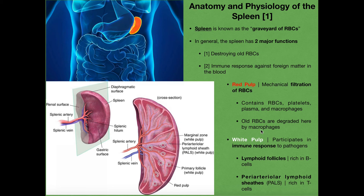What's probably new with the lymphatic system is the white pulp. The white pulp is deep to the red pulp — you can see the whitish areas in the spleen cross-section here. The primary function of the white pulp is to participate in immune responses to pathogens that enter through the blood. To combat those pathogens, the spleen has lymphoid follicles. A primary follicle is very dense with white pulp, and these lymphoid follicles are rich in B cells — the structures that look almost like a flower are your lymphoid follicles.